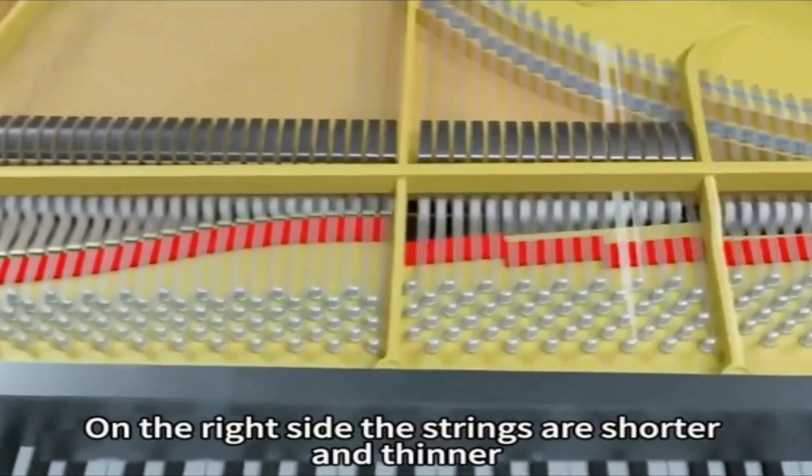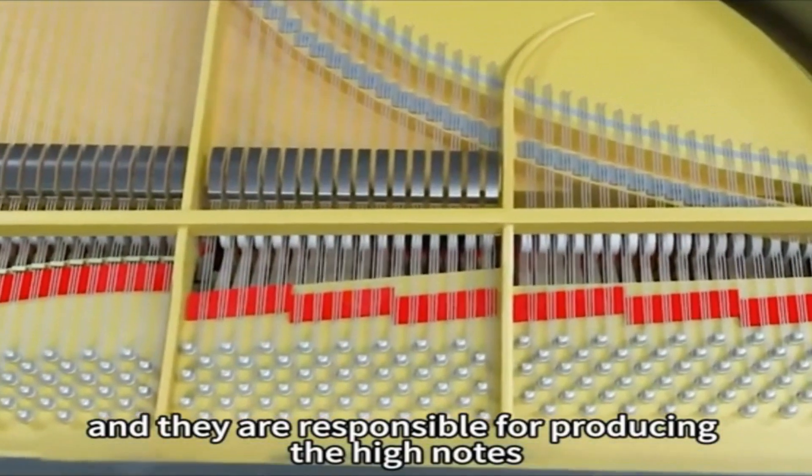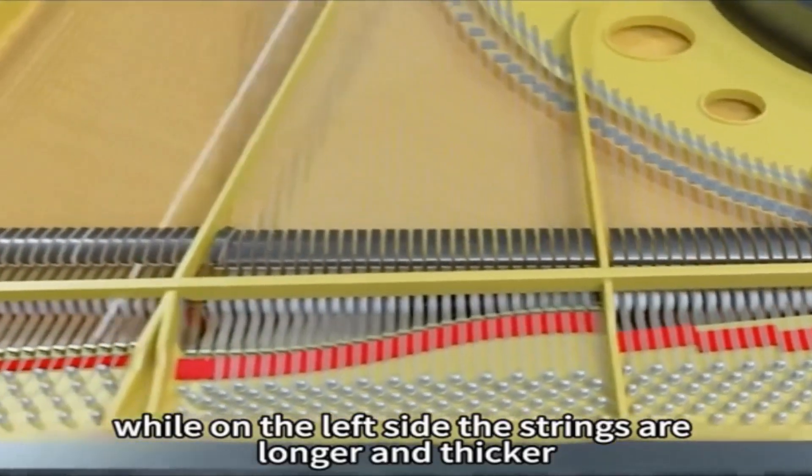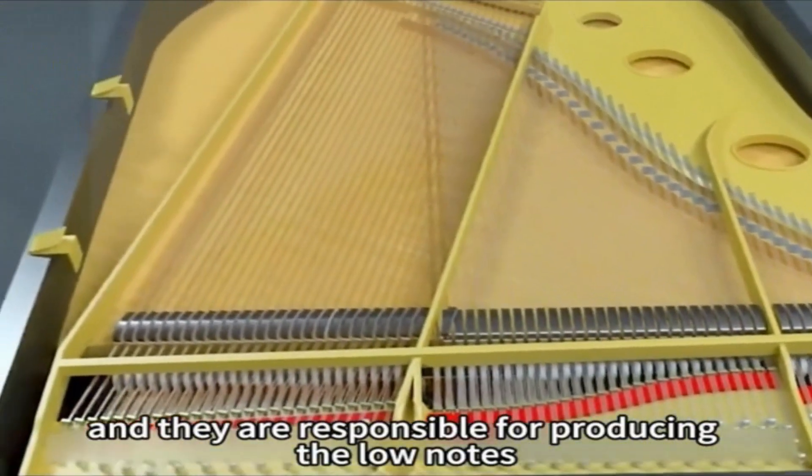On the right side the strings are shorter and thinner, and they are responsible for producing the high notes, while on the left side the strings are longer and thicker, and they are responsible for producing the low notes.